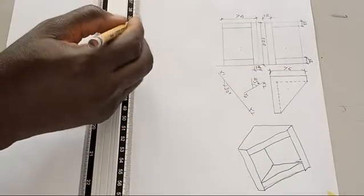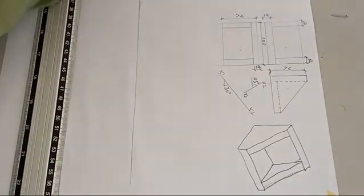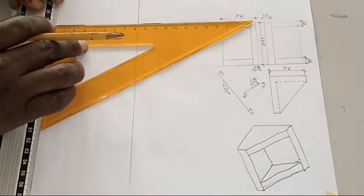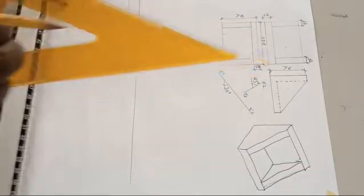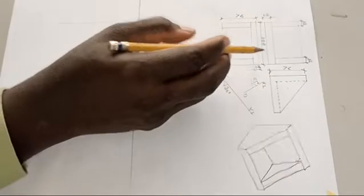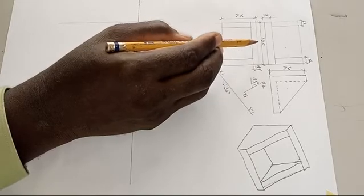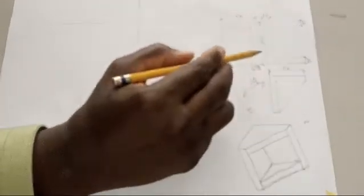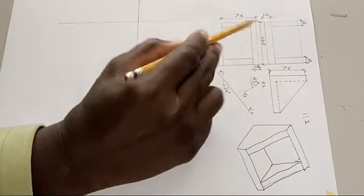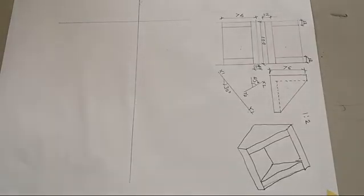That means your projection will be perpendicular to this plane X2Y2. So first we need to draw the plan and elevation. We can now project this side. The question is we're going to solve it in a ratio of one to two.